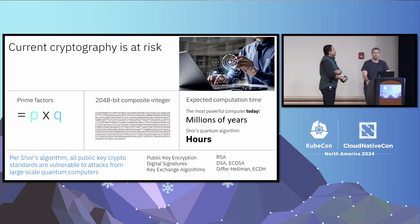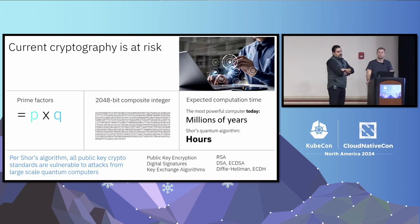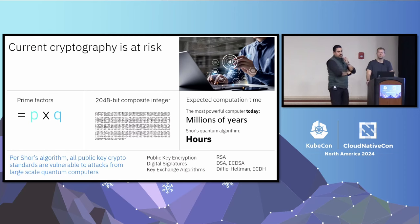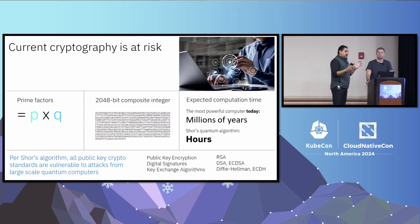Why do you care? Because of cryptography. It doesn't matter how large your RSA keys are — if someone had a large enough quantum computer, they could crack it. Those don't exist yet; we have 100-qubit quantum computers, but you need around 10,000 qubits to crack current RSA keys, and we don't have that yet.